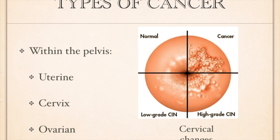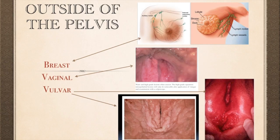Within the pelvis, there is uterine, cervical, and ovarian cancer. Outside of the pelvis, we are concerned about breast cancer, vaginal, and vulvar cancer. We will discuss each type of cancer as the lecture proceeds.